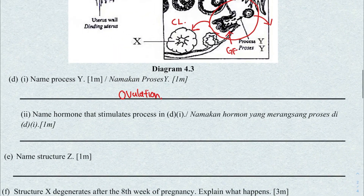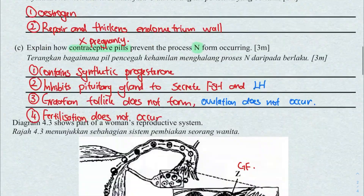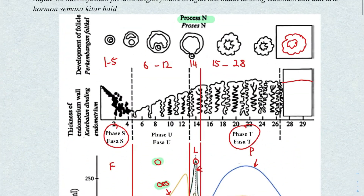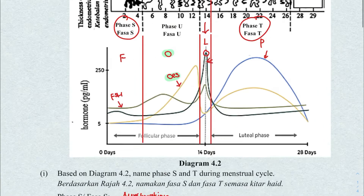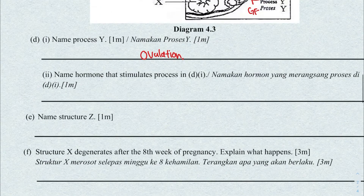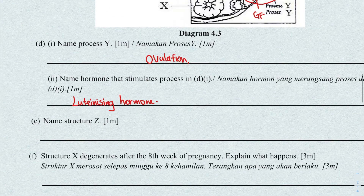D2: name the hormone that stimulates process Y — ovulation. If you're not sure, the graph can actually help you for this question. The answer is luteinizing hormone, LH, that stimulates ovulation. Always write the full name. That labeled structure — which we already identified — is the Graafian follicle.